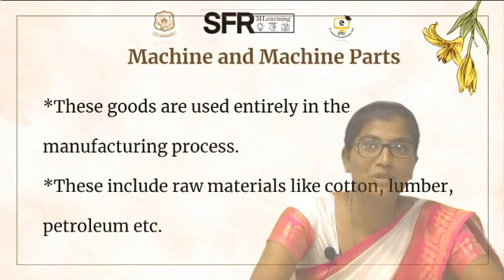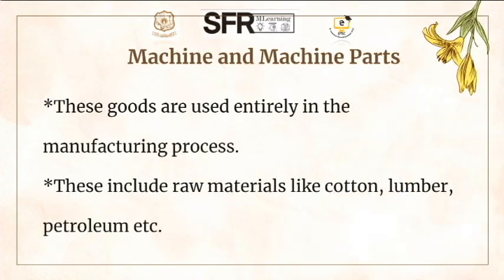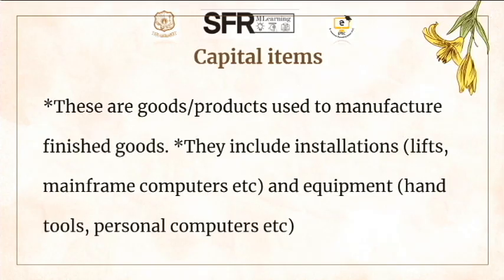Machines and machine parts: these goods are used entirely in the manufacturing process. They include raw materials like cotton, lumber, petroleum, etc. They also include manufactured products like glass and rubber.